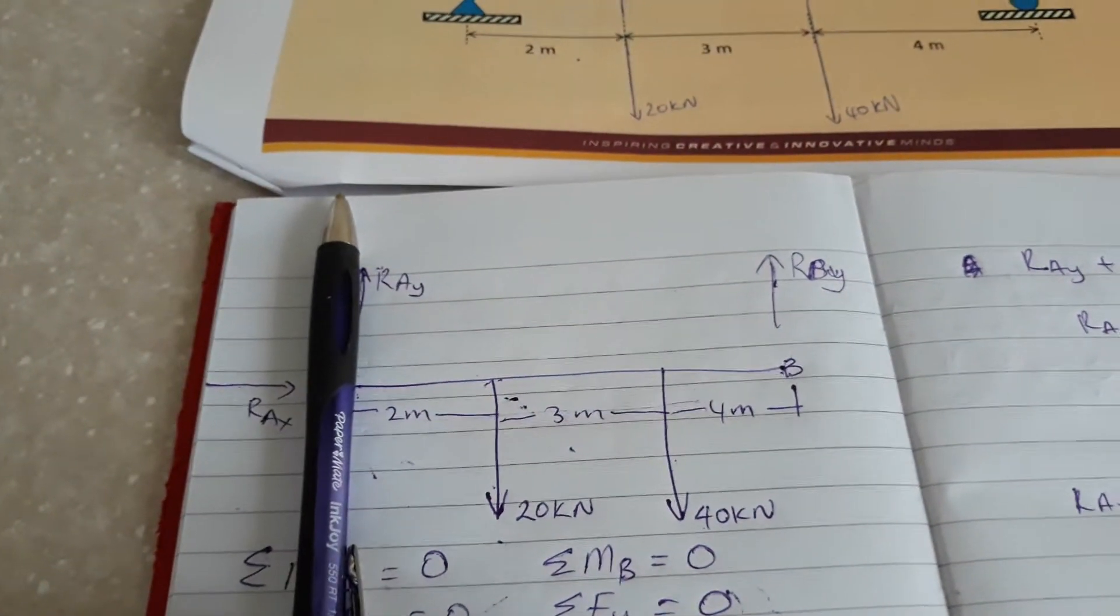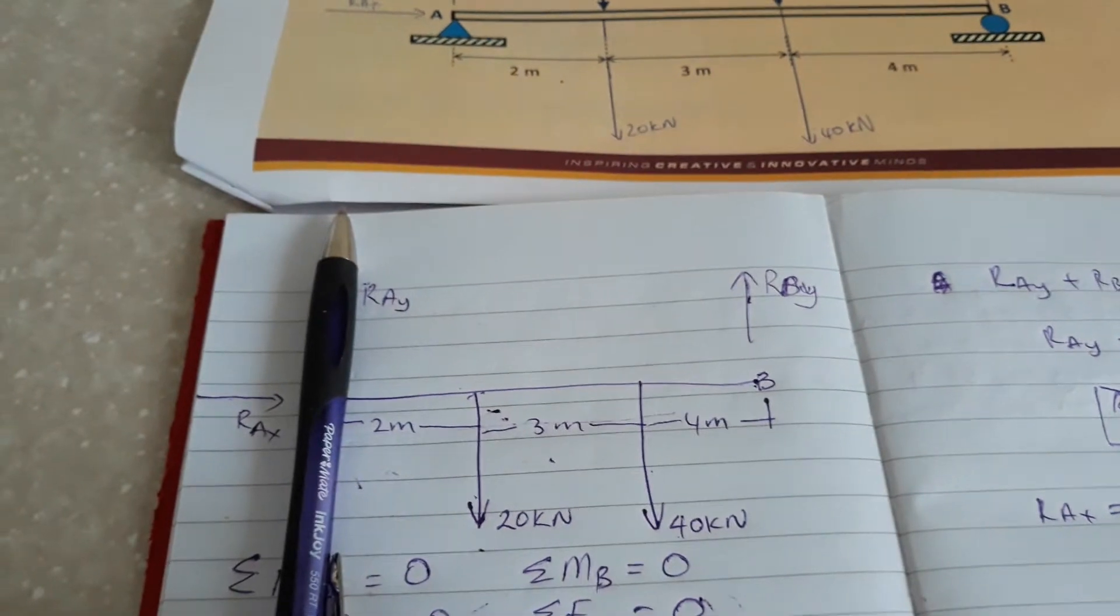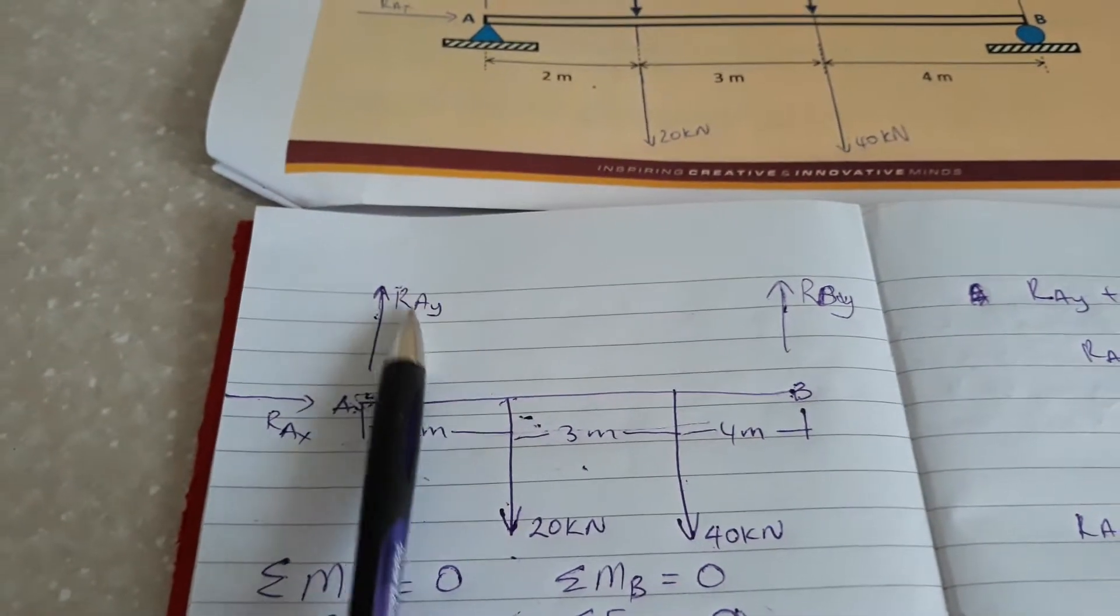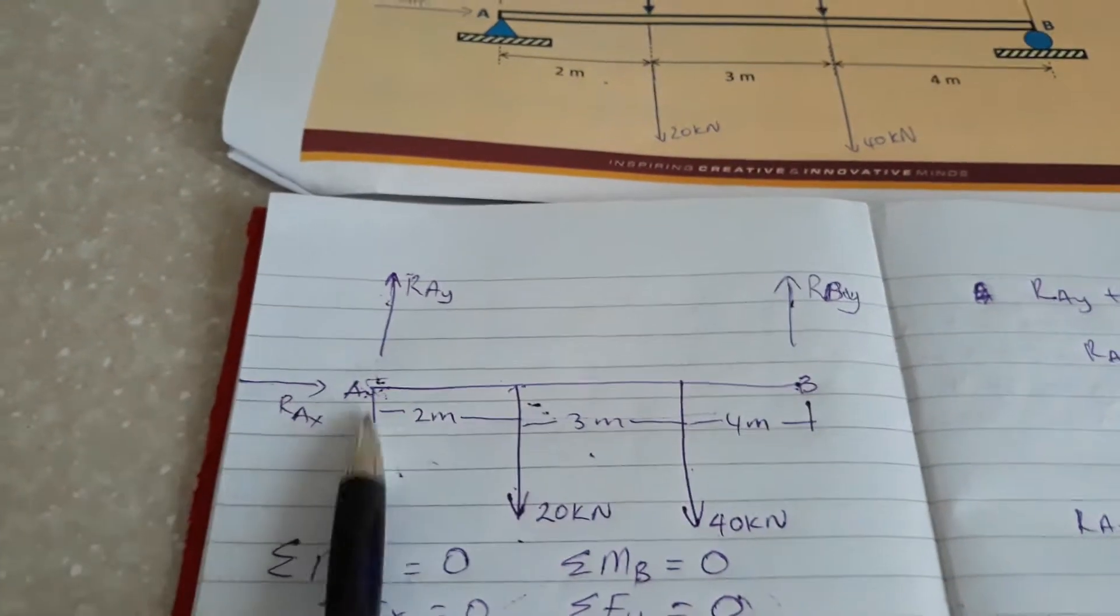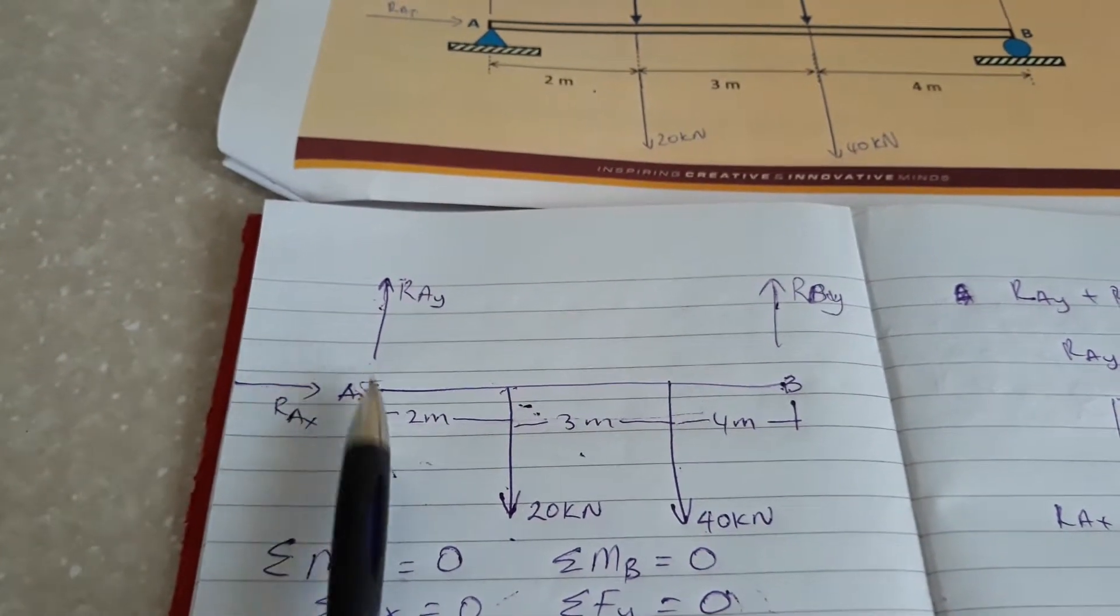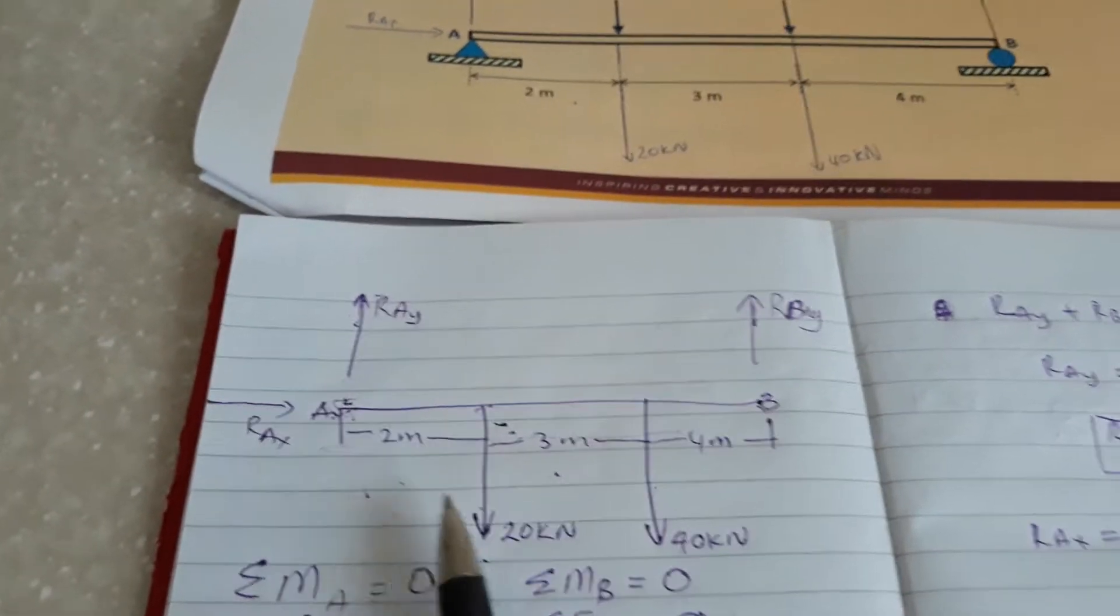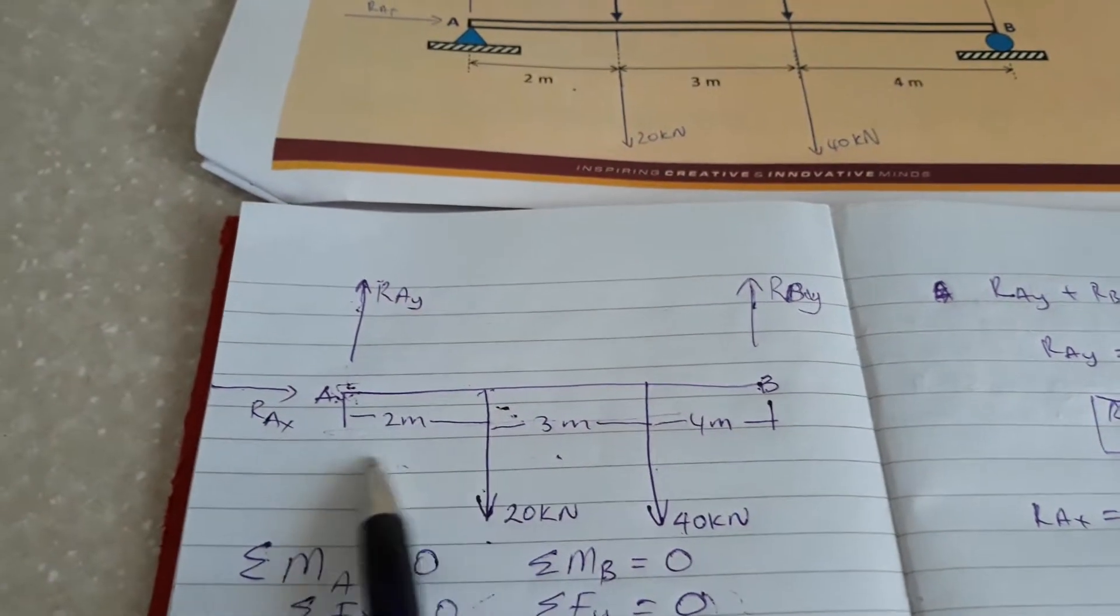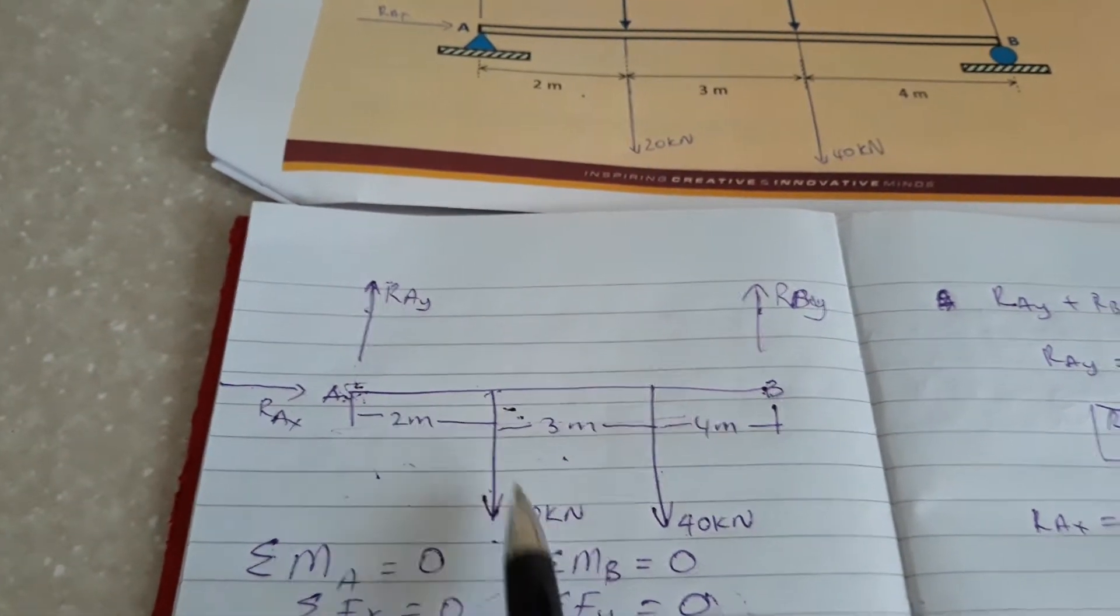You can stay at this point and from here it's obvious that reaction Ay and reaction Ax will produce no moment because the distance from point A is zero. But the moment for the 20kN force is 20 times 2.